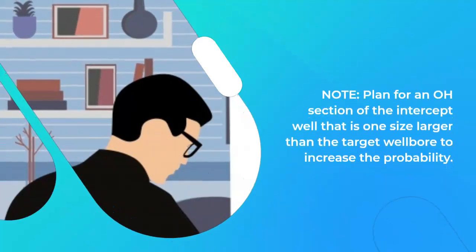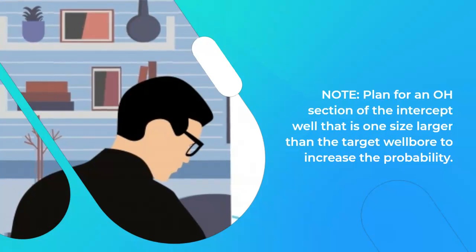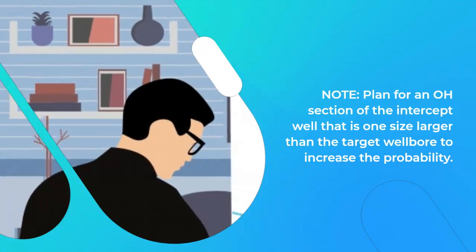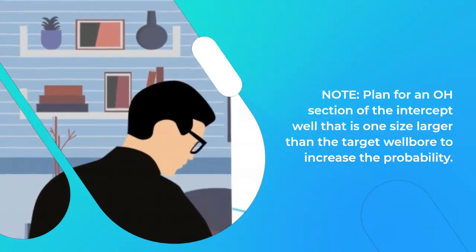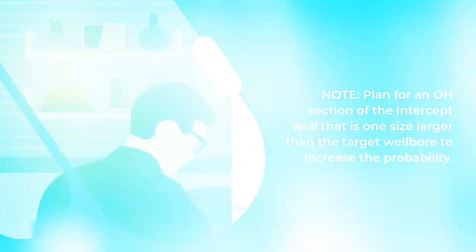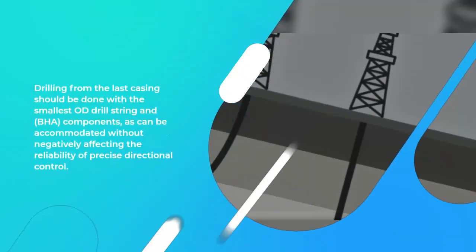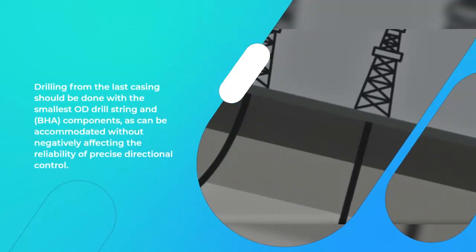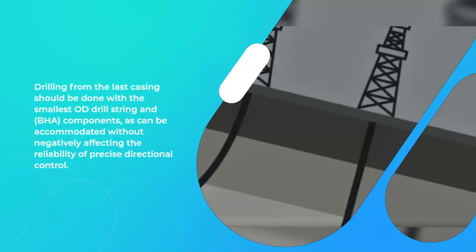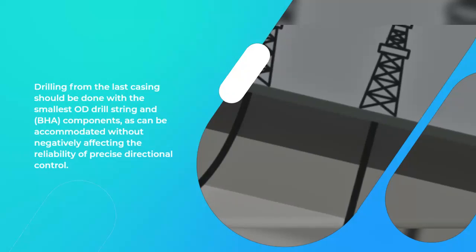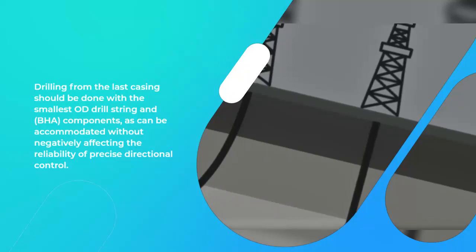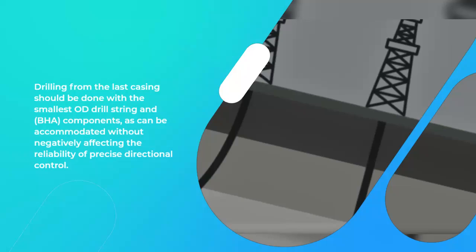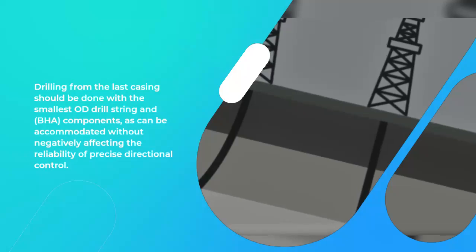Plan for an open hole section of the intercept well that is one size larger than the target wellbore to increase the probability of intersection. Drilling from the last casing should be done with the smallest possible drill string and BHA components, as can be accommodated without negatively affecting the reliability of precise directional control.